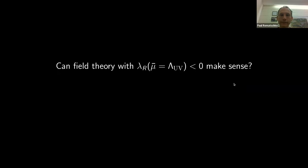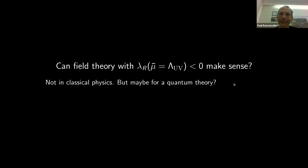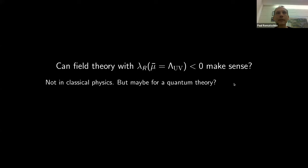The question I want to address is: is it possible to have a well-defined theory with a negative coupling constant? Not in classical physics — but we are interested in quantum field theory, and there are cases where quantum mechanics overrides classical intuition. I want to suggest that classically unstable potentials can potentially make sense in a quantum theory context.